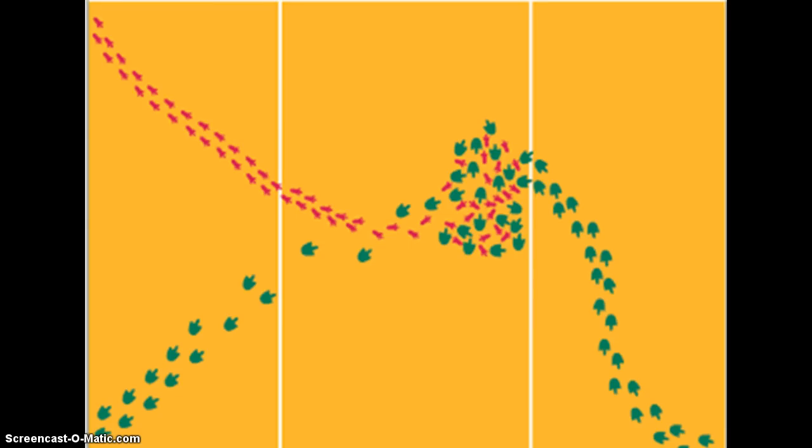An observation is simply information that you collect about the world around you, about your environment, using one of your five senses — sight, touch, taste, sound, and smell. In this case, we're using our sight because we have a picture to look at, so you could observe several different things about this picture, and if I gave you a couple seconds, I bet you could come up with a few on your own.